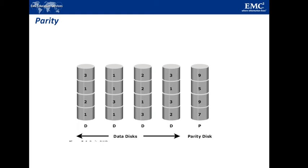The parity disk has value 9 in the first row, which is the sum of values in all 4 data disk drives: 3+1+2+3=9. Second row: 1+1+2+1=5. Third row: 2+3+1+3=9. Last row: 1+1+3+2=7. If one of the data disks fails, the missing value can be calculated by subtracting the sum of the remaining elements from the parity value. For example, if the second disk (containing value 1 in the first row) fails, the remaining values are 3+2+3=8, and 9−8=1, recovering the lost data.